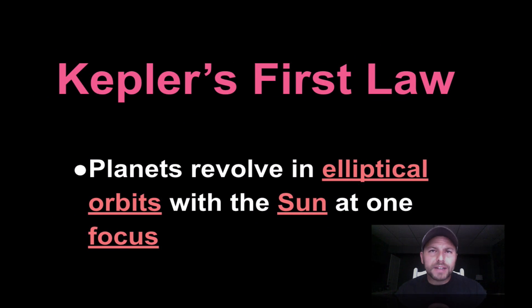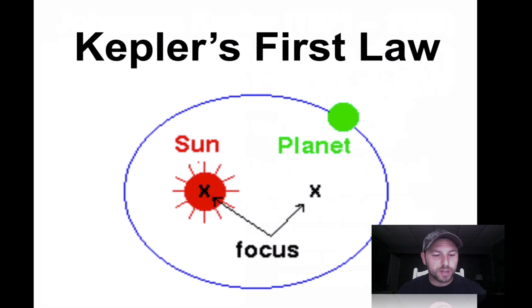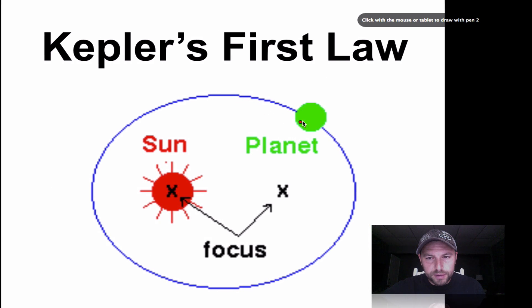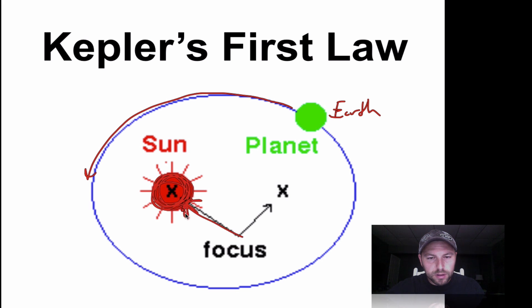So the first law: planets revolve in elliptical orbits with the sun at one of the focus. Doesn't mean much until we see an image like this. So here's our orbit. This is our planet, so we can call this Earth or any other one, and it's just revolving around the sun right here. Notice that the sun is at one of the focus and it'll just revolve around. That's it. That's Kepler's first law.